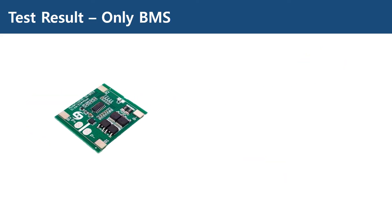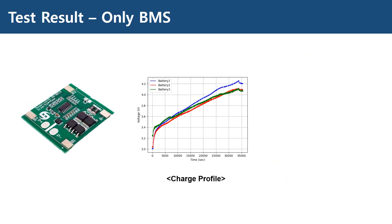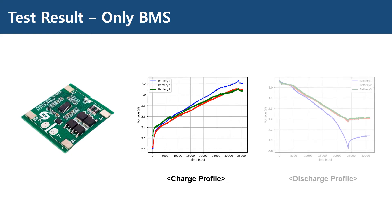This is the charge result using only the BMS. You can see the voltage of the blue line, which is the first cell, is increasing faster than the other cells, and eventually reaching the charge protection limit of the BMS and disconnecting further charging. As you can see, the second and third cells are not fully charged.